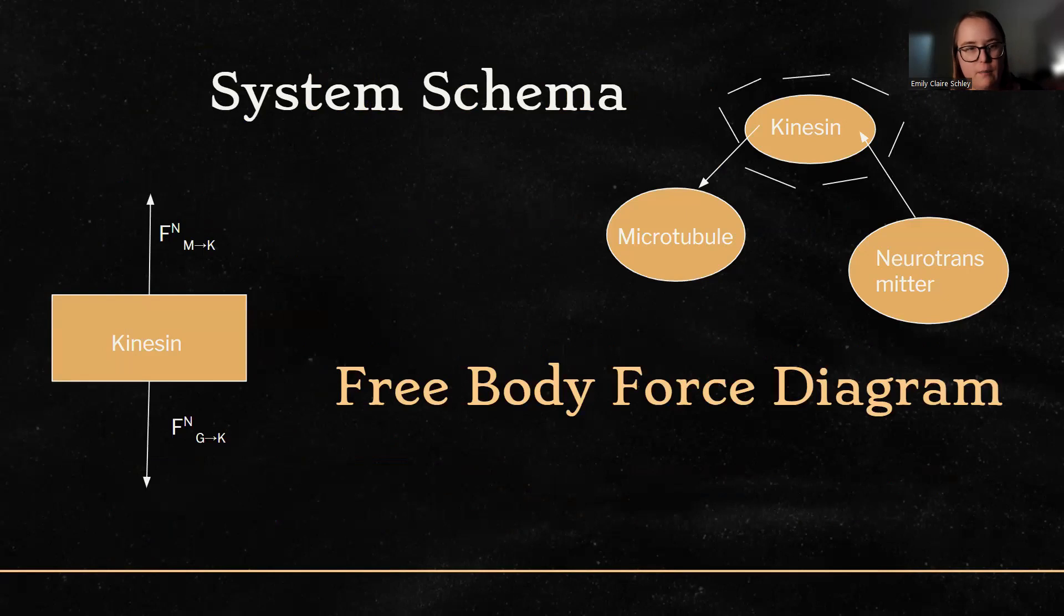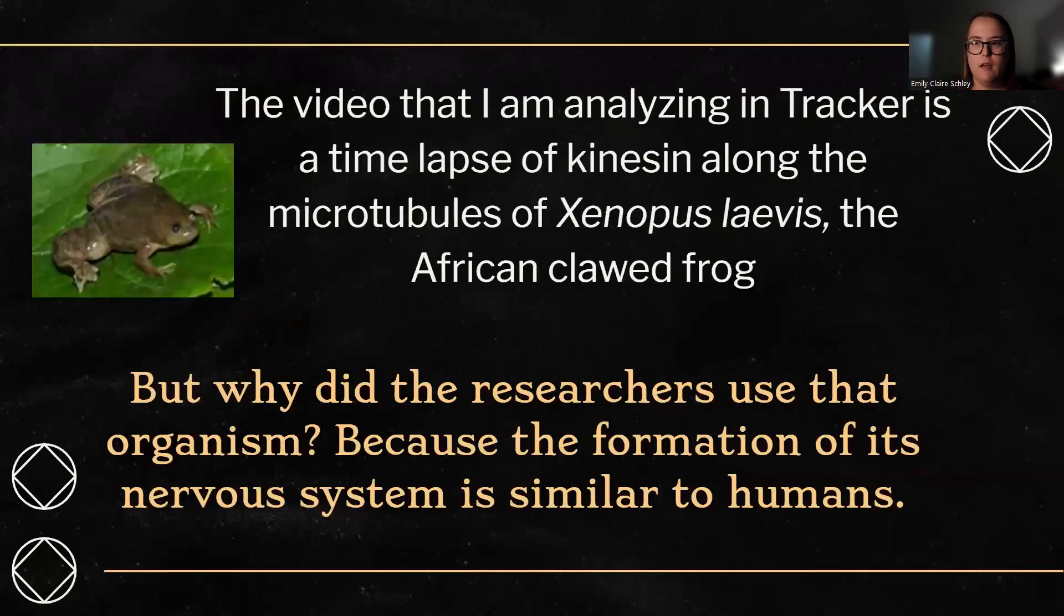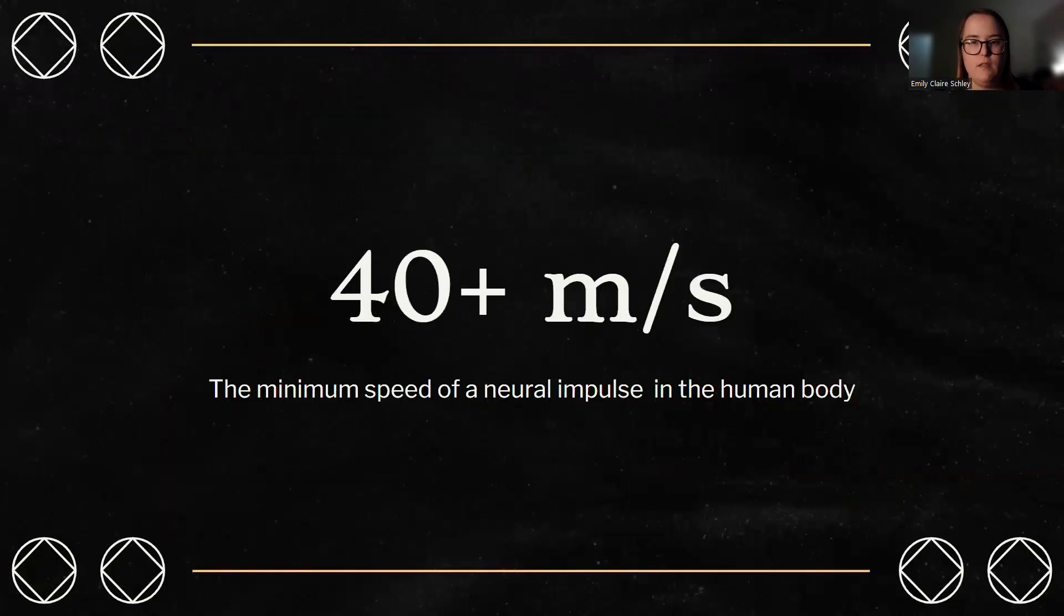This is just a system schema and a free body force diagram. The only forces acting on the kinesin are the normal force and the force of gravity. The video I analyzed in Tracker is the time-lapse of kinesin along the microtubules of Xenopus lapis, which is a clawed frog, which a lot of researchers pick just because its nervous system is very close to that of humans.